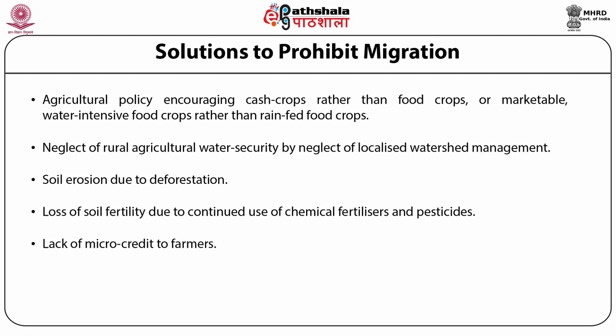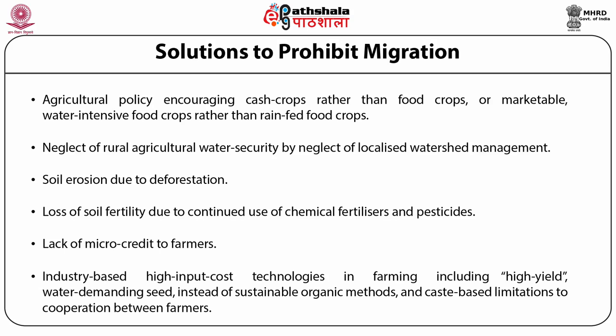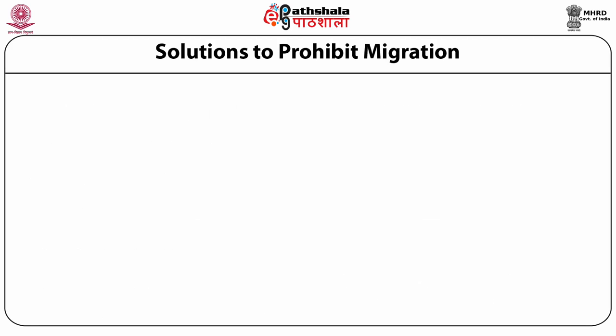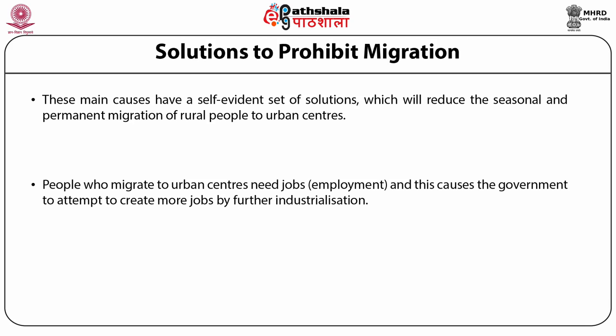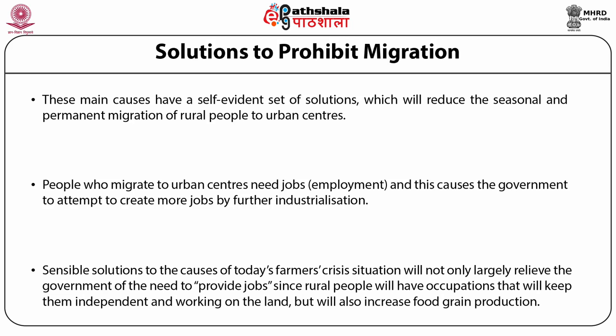Further causes include lack of micro-credit to farmers, and industry-based high-input cost technologies in farming, including high-yield water-demanding seeds instead of sustainable organic methods, and cost-based limitations to cooperation between farmers. These main causes have a self-evident set of solutions which will reduce the seasonal and permanent migration of rural people to urban centers. People who migrate to urban centers need employment, and this causes the government to attempt to create more jobs through further industrialization. Sensible solutions to the farmers' crisis will not only relieve the government of the need to provide jobs, but will also increase food grain production.